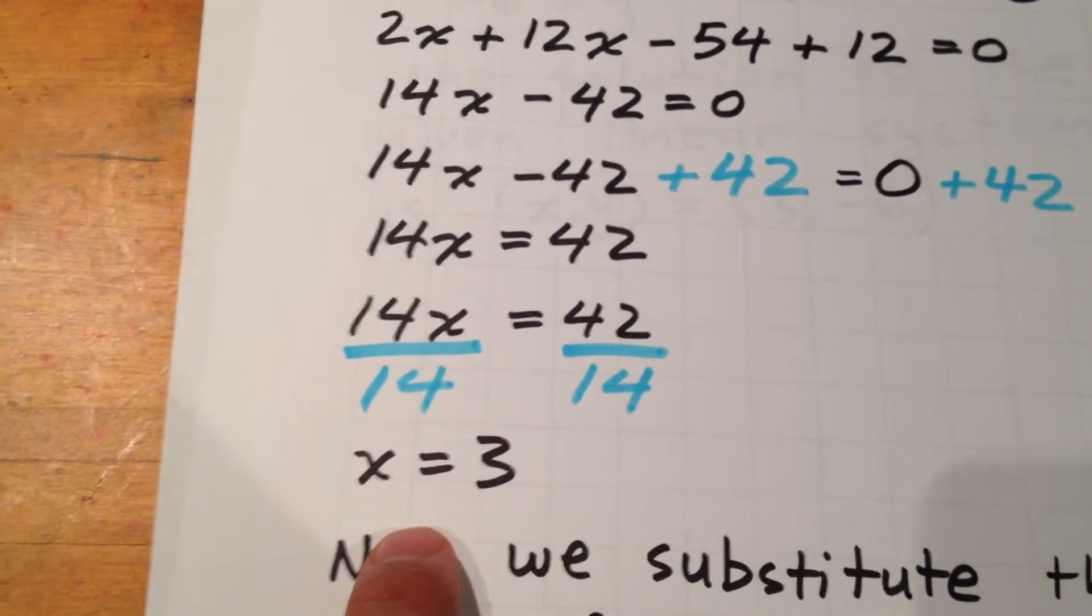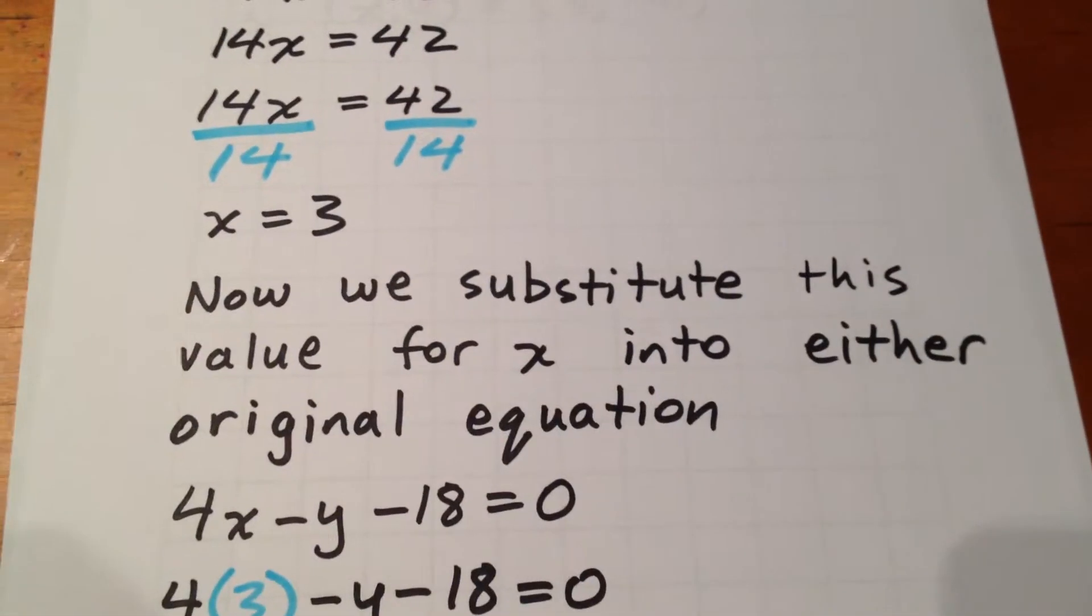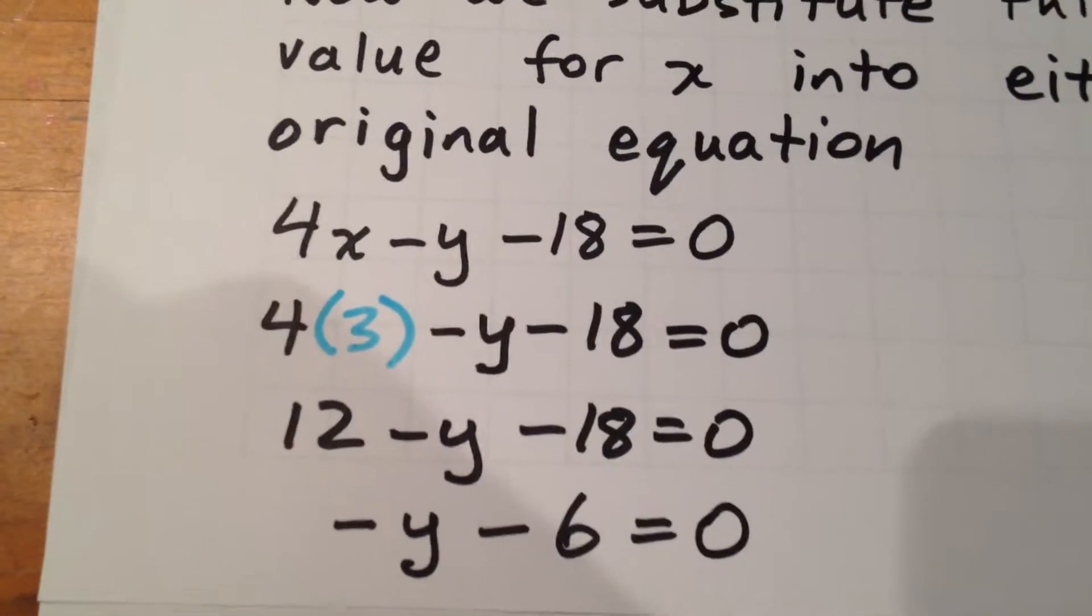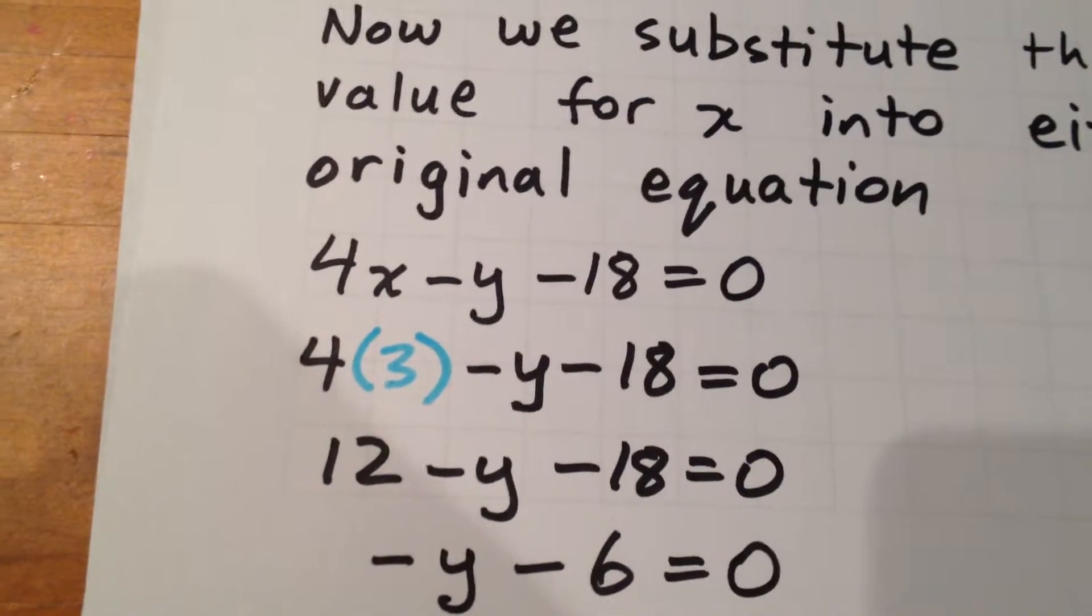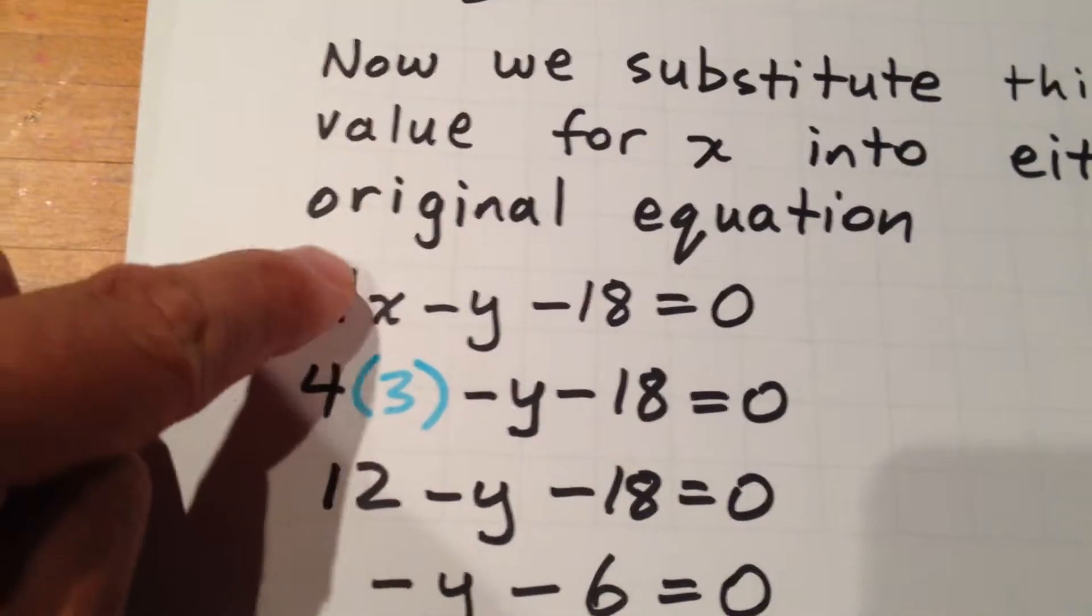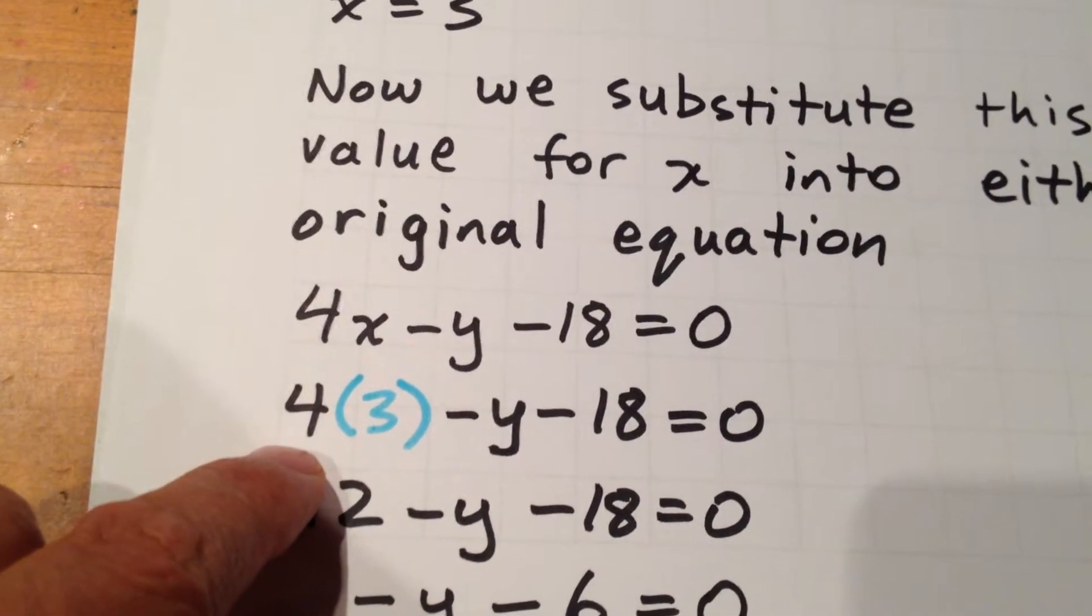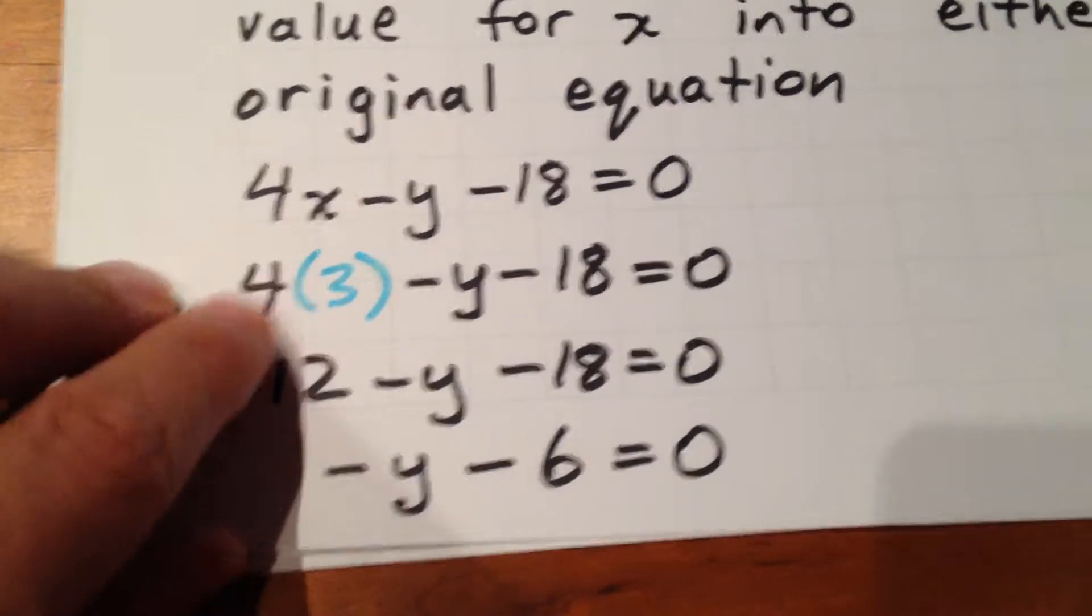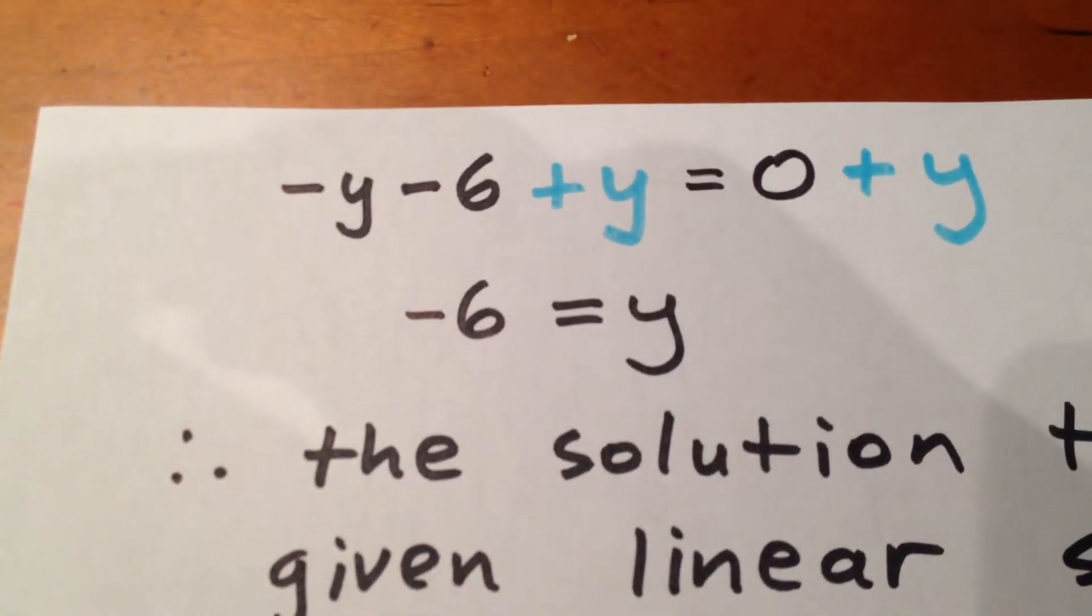At this point we've only solved for one of the variables. We need to solve for both. So we're going to substitute that value of x into either of the original equations. So I went back to the first equation: 4x minus y minus 18 equals 0. We're going to take that x value of 3, sub it in and we get 4 times 3 minus y minus 18 equals 0. Which ultimately means negative y minus 6 equals 0. Solving for y gives us negative 6 equals y.